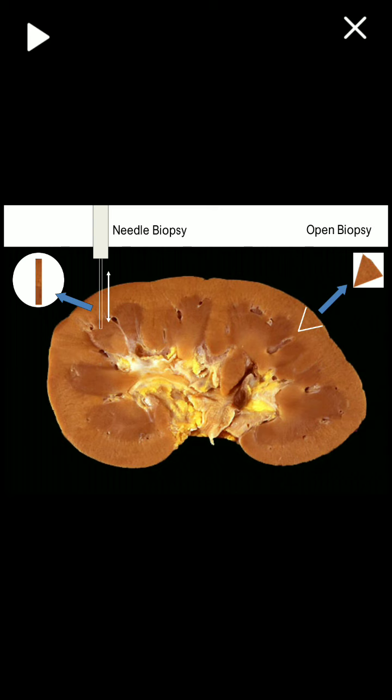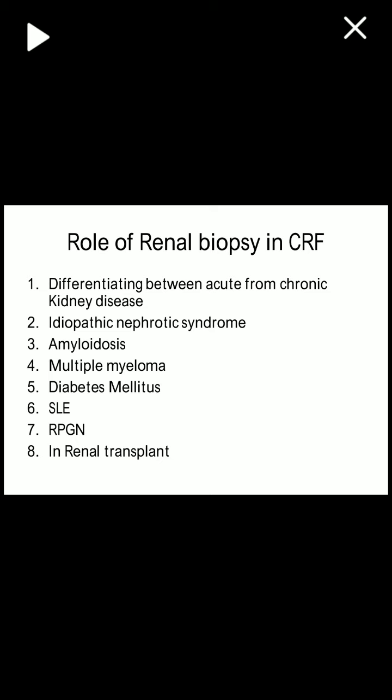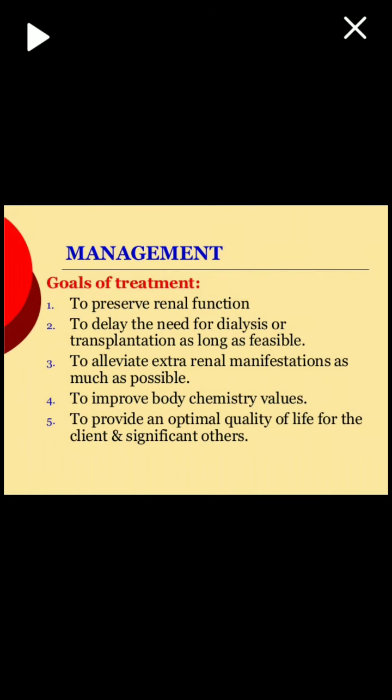Two types of renal biopsy are available: needle biopsy and open biopsy. The role of renal biopsy in chronic renal failure is to differentiate acute from chronic kidney disease, and to identify causes such as nephrotic syndrome, amyloidosis, multiple myeloma, diabetes mellitus, SLE, RPGN, or in renal transplant cases. The goals of treatment are to preserve renal function, delay the need for dialysis or transplantation, alleviate extrarenal manifestations, improve body chemistry values, and provide optimal quality of life.